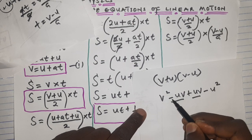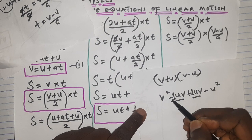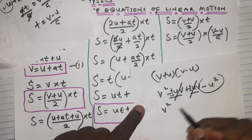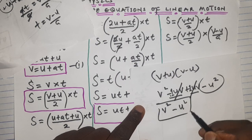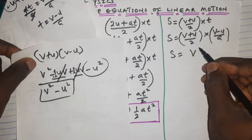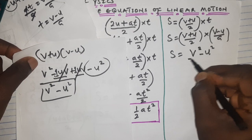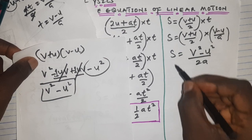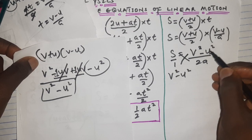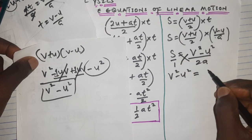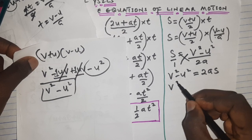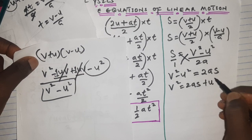Expanding (v + u)(v − u): v × v = v², v × (−u) = −uv, u × v = +uv, u × (−u) = −u². The −uv and +uv cancel, leaving v² − u². So s = (v² − u²) / 2a. Cross-multiplying: v² − u² = 2as.